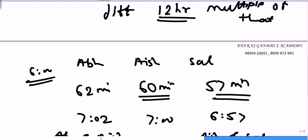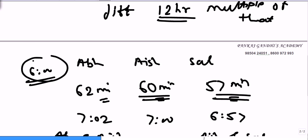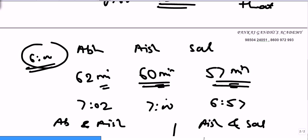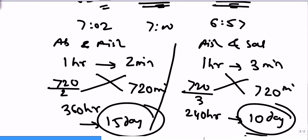To recap: Ashwarya is on right time, showing sixty minutes per hour. Abhishek gains two minutes, showing sixty-two. Salman's watch loses three minutes, showing fifty-seven. If we started all at six o'clock, after one hour Ashwarya shows seven, Abhishek shows seven-oh-two, and Salman shows six fifty-seven. For Ashwarya and Abhishek: one hour difference is two minutes, so 720 divided by 2 equals 360 hours — every fifteen days. For Ashwarya and Salman: one hour difference is three minutes, so 720 divided by 3 equals 240 hours — every ten days.